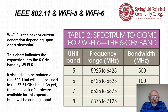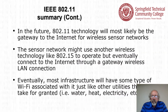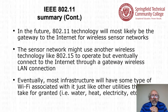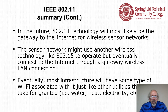802.11ad will also be used in the 57 to 61 gigahertz band; as yet there's a lack of hardware available for this operation, but it will be coming soon. In the future, 802.11 technology will most likely be the gateway to the internet for wireless sensor networks. The sensor network might use another wireless technology like 802.15 to operate, but eventually connect to the internet through a gateway wireless LAN connection. Eventually, most infrastructure will have some type of Wi-Fi associated with it, just like utilities we take for granted — water, heat, and electricity.